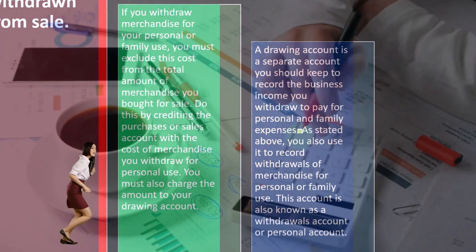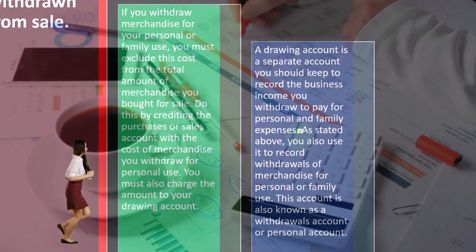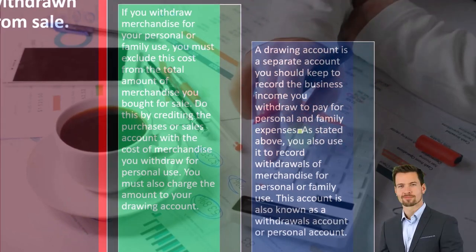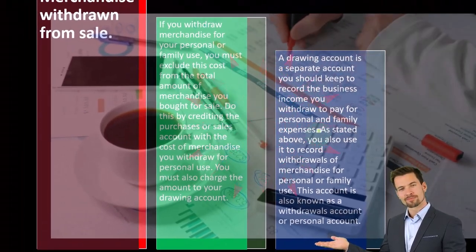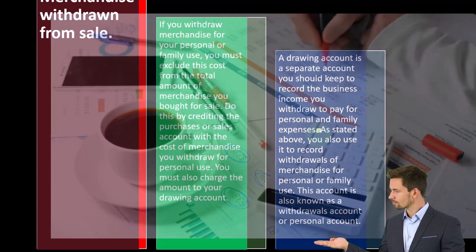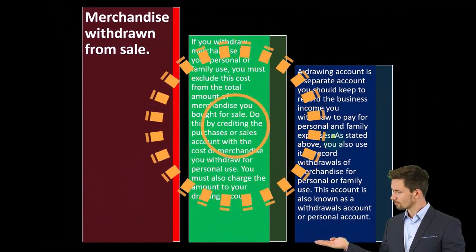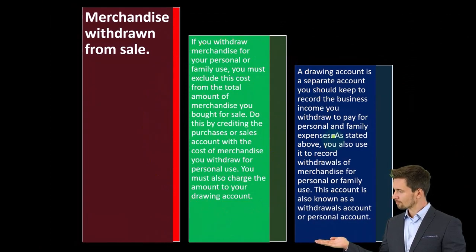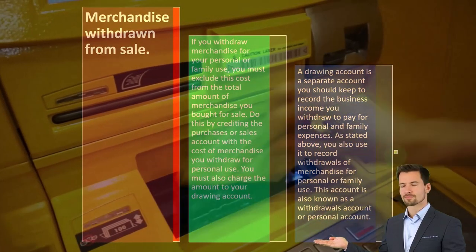When you take money out, you can't record it as a business expense lowering net income, but instead as a draw, which is a balance sheet account. It isn't shown on the tax return, because the tax return only has an income statement generally. It would not record an expense on the income statement because you took it out for personal use — you didn't expend the money for the business.